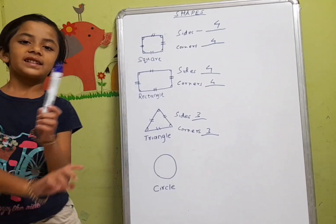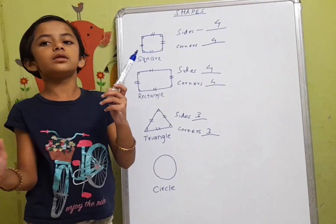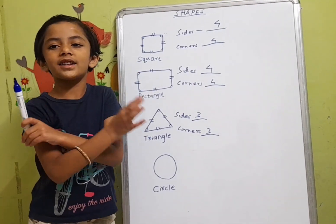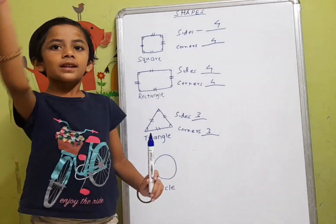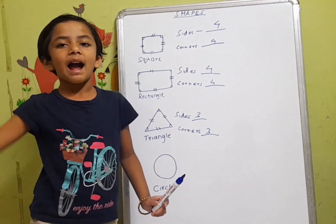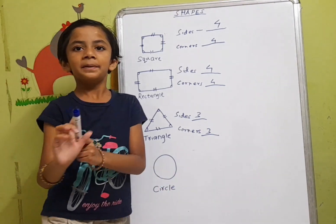Circle. A circle has no corners, no sides. It is a round shape.